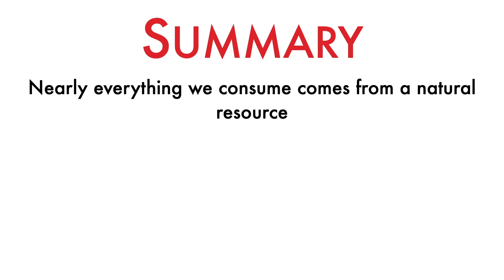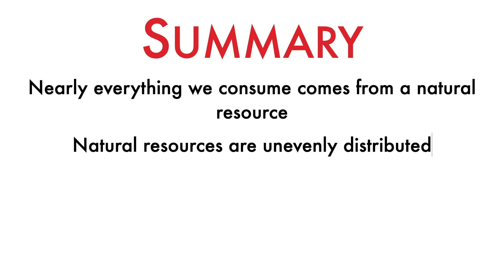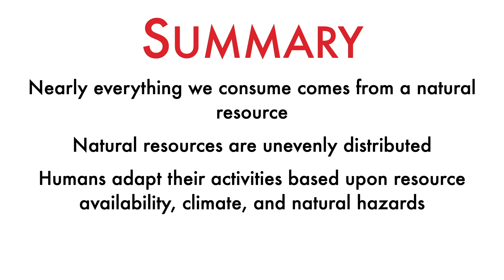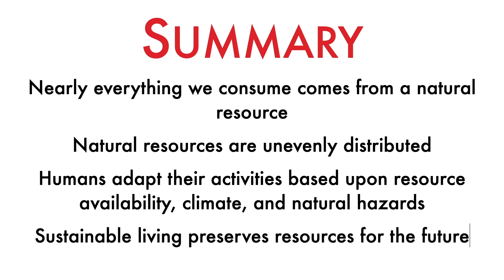There is only a finite amount of resources available for our use, and humans must learn to maximize the planet's resources as efficiently as possible. To recap: nearly everything we eat, use, or consume had its start as one of Earth's natural resources. Natural resources are unevenly distributed around the planet, and are more abundant in some areas than others. Humans have had to adapt their activities based upon the availability of natural resources, the Earth's variable climate, and the occurrence of natural hazards. And living sustainably means meeting today's needs while also preserving the Earth's natural resources for the use of future generations.